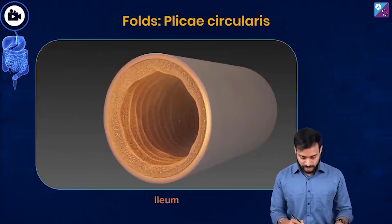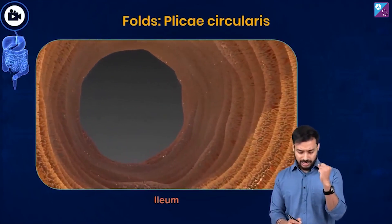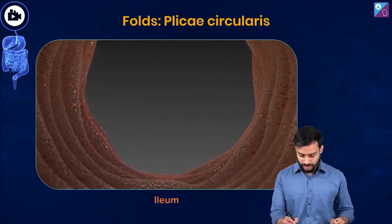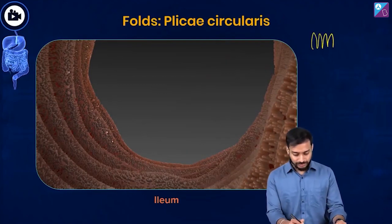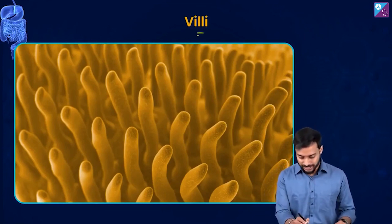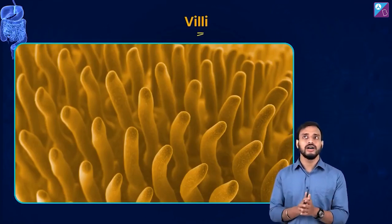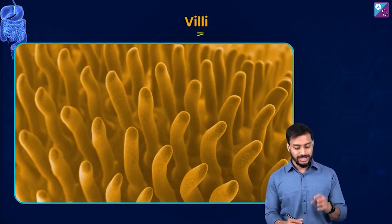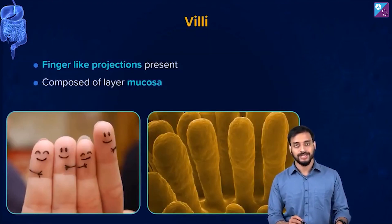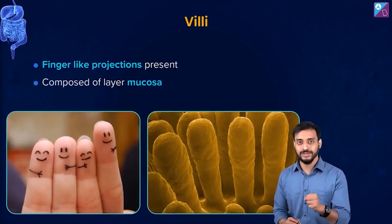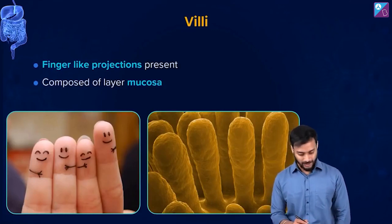Let's take a closer look at these projections. They seem finger-like — finger-like projections. They are known as villi, the intestinal villi. Do they resemble something we have already seen? Think of the animal kingdom — like a sea anemone. Yes, like in Finding Nemo, where Nemo hides into those structures.